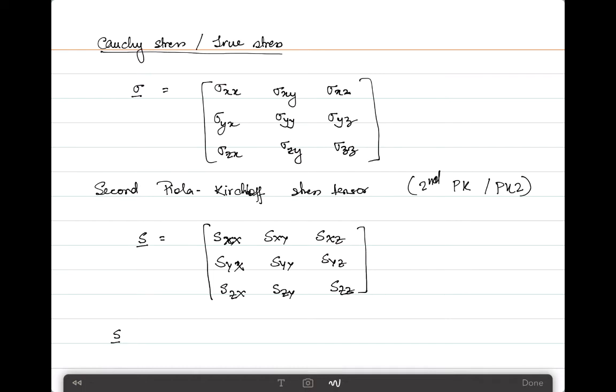Without going into a lot of details, S which is the second Piola-Kirchhoff stress tensor can be given as J F inverse times the Cauchy stress sigma F inverse transpose, or the other way around if you have your Cauchy stresses then you can get J inverse F S F transpose. J here is given as the determinant of the deformation gradient F.